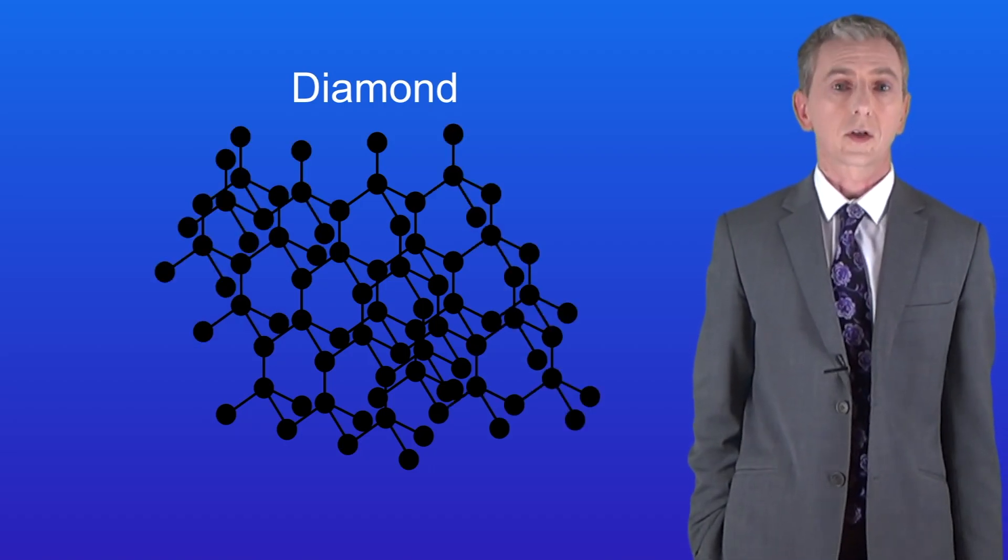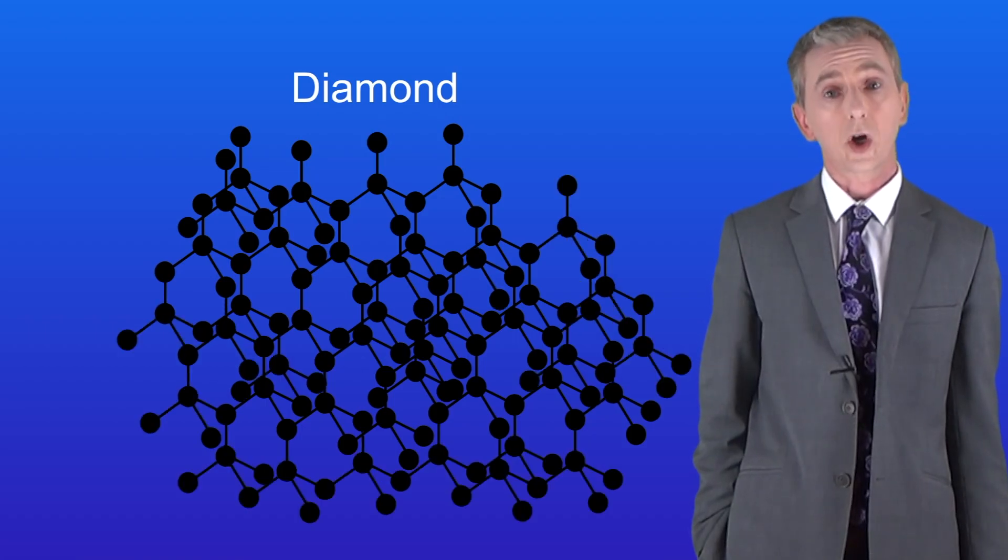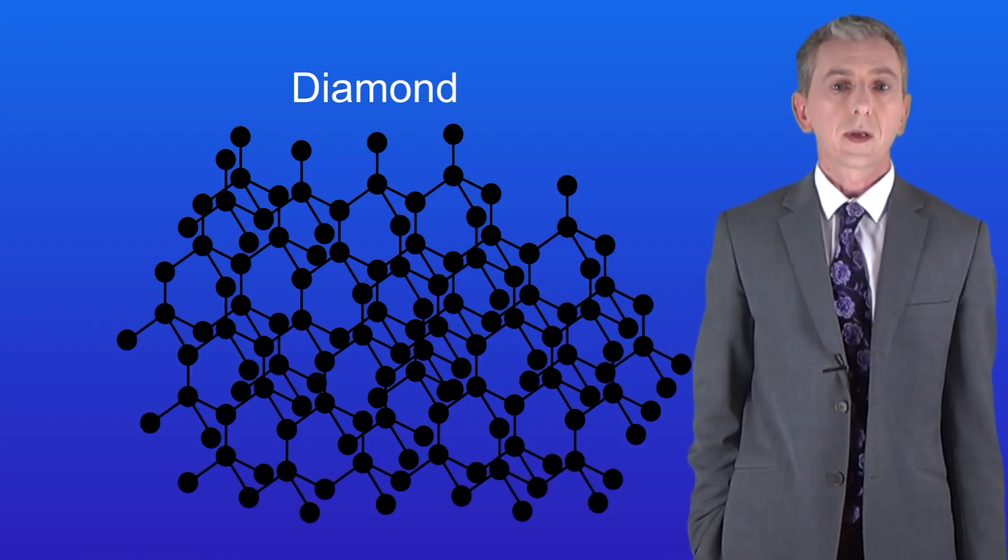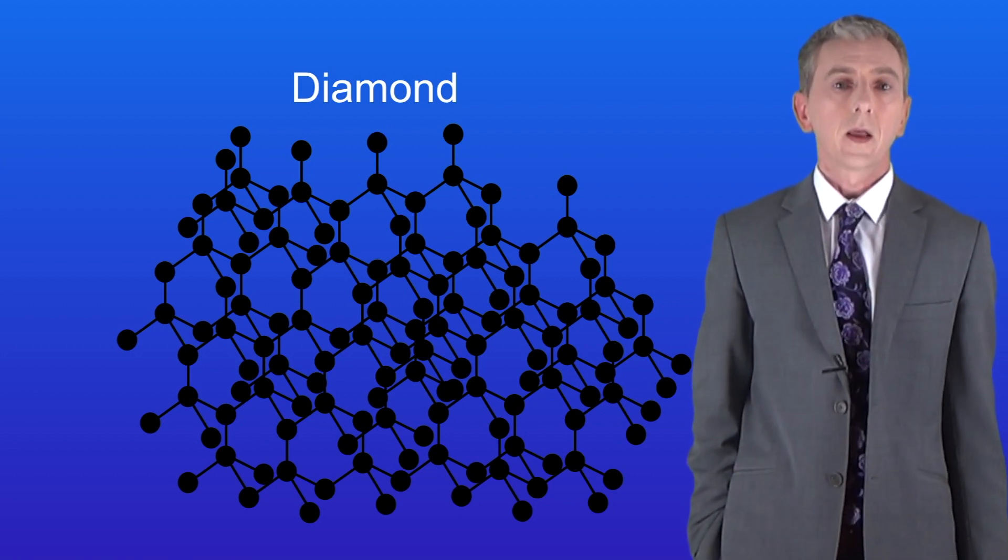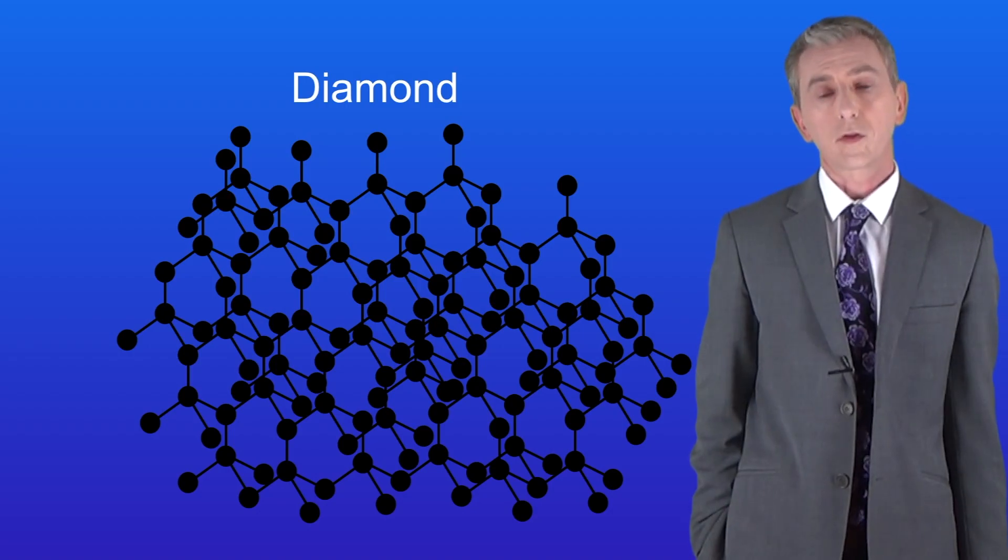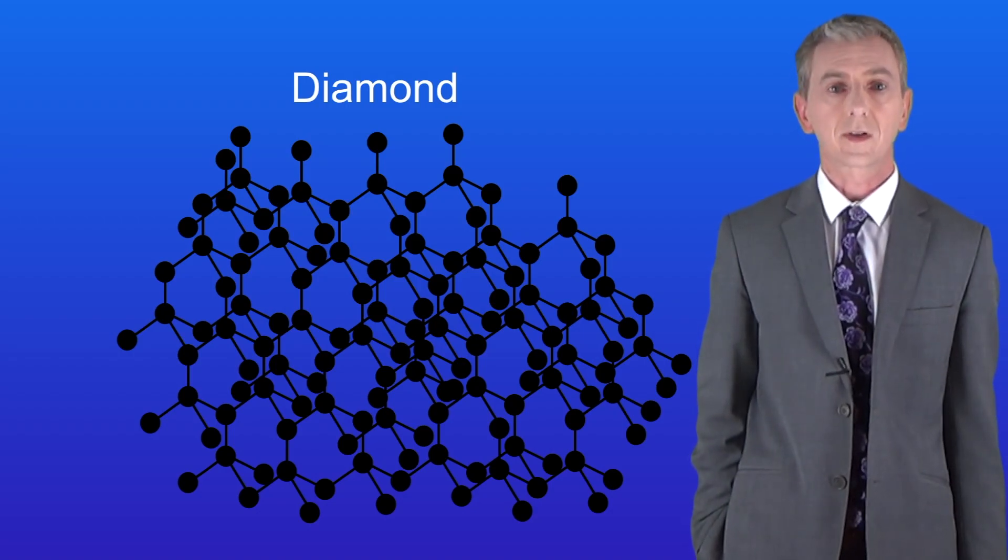Even a tiny diamond contains millions upon millions of carbon atoms joined by covalent bonds. This means that diamond has a very high melting and boiling point. The melting point of diamond is over 3700 degrees celsius.